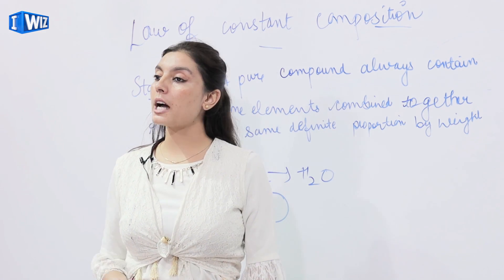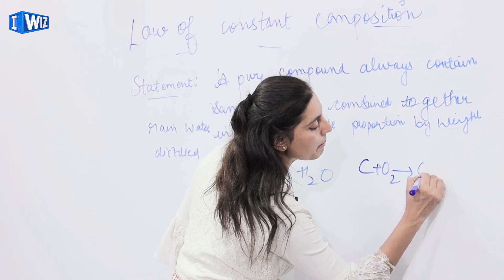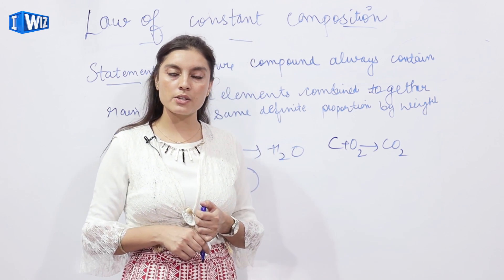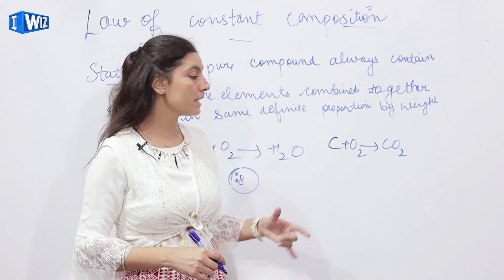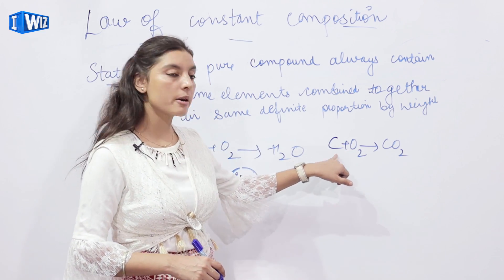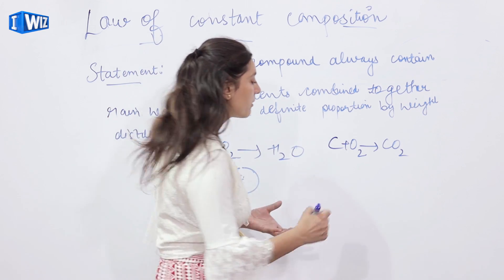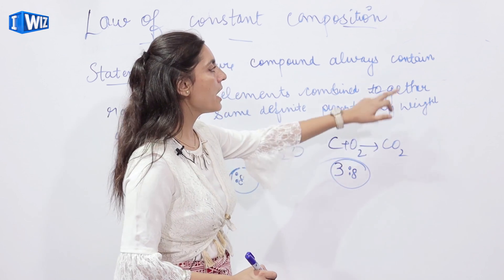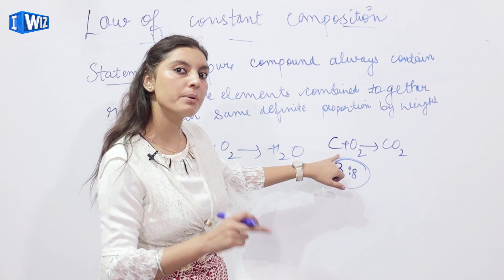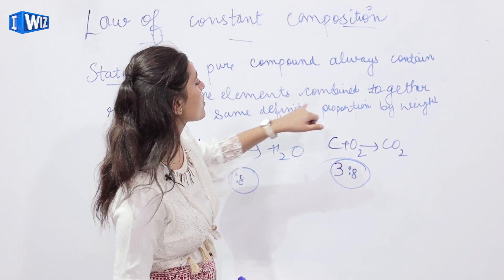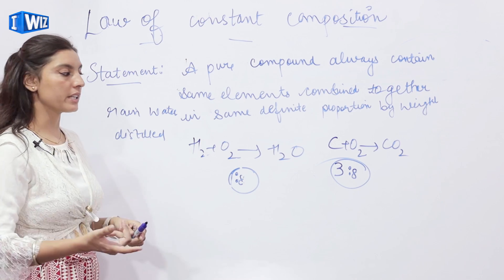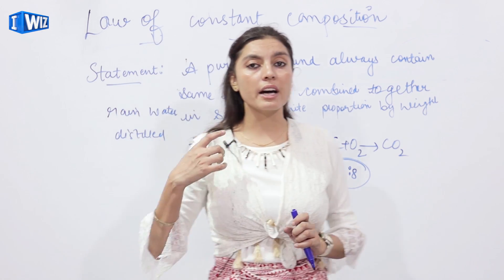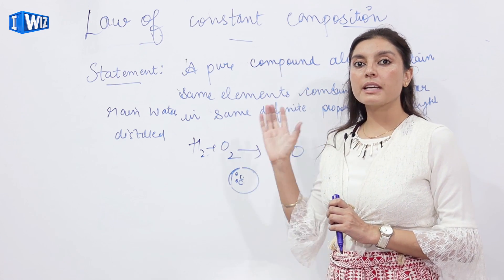Similarly for carbon dioxide: whether carbon and oxygen combine by burning a candle, by decomposition of calcium carbonate, or through respiration, carbon dioxide is always formed by carbon and oxygen combining in the ratio 3 is to 8. Irrespective of the source, whenever a pure compound is formed, it contains the elements from which it is formed in the same ratio every time, in definite proportion by their weight. This law forms the basis of all five laws of chemical combination.